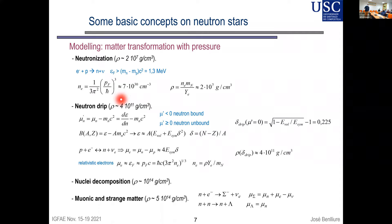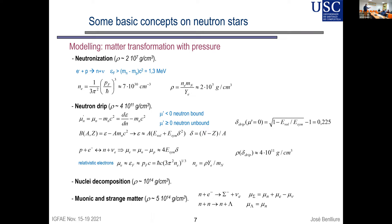Neutron drip starts at around 10^11 grams per cubic centimeter. When we reach saturation density, nuclei dissolve and what we have is a liquid made of neutrons and a few protons and electrons. At a few times saturation density, neutrons and protons may transform into other species: hyperons and other exotic phases of matter are expected in the innermost part of the star.